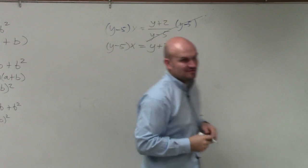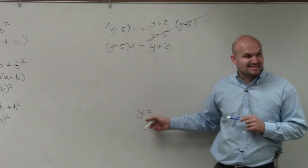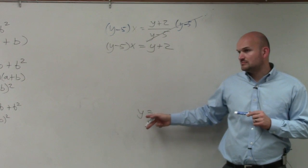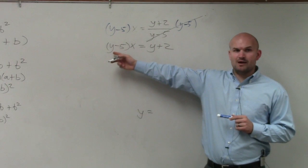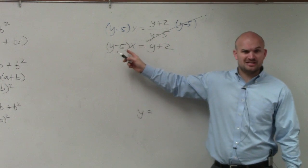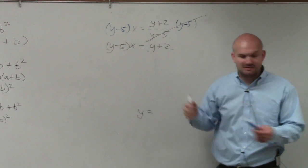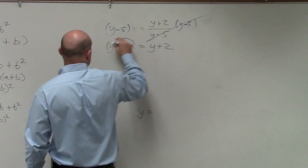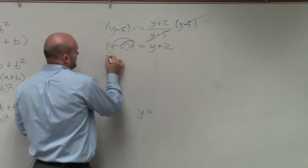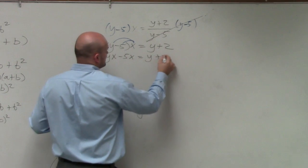So I'm left with y minus 5 times x equals y plus 2. Now, when we're solving for y, is that y within the parentheses? No. We can't solve for y when it's inside parentheses. So how do we get rid of the parentheses? We apply the operation that the parentheses is there for, which is the distributive property about the x.